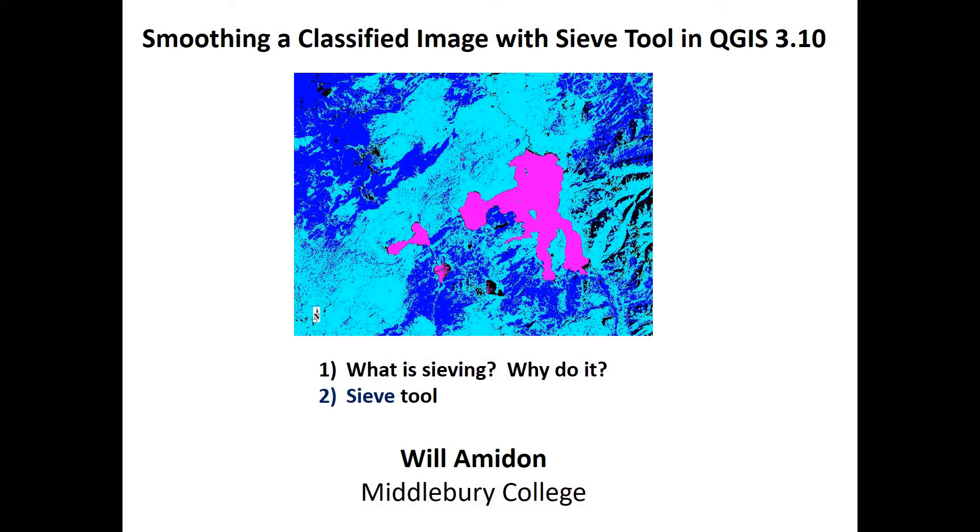We recently classified an image of Yellowstone National Park and as with most classifications we get a lot of isolated pixels or misclassified pixels that are sitting off by themselves, creating a speckled appearance. Generally if you're working towards creating a map out of your classified image you want to simplify as much as possible and get rid of those isolated pixels.